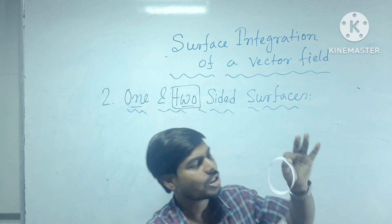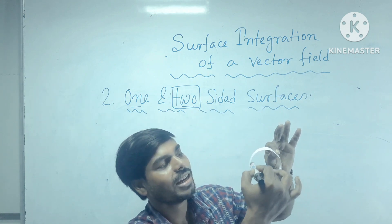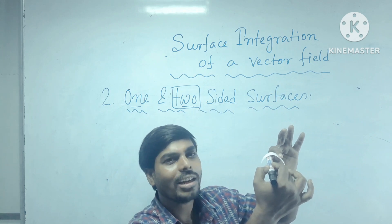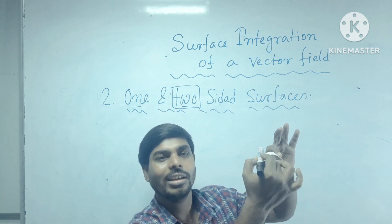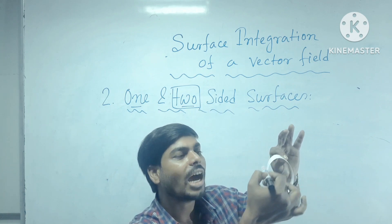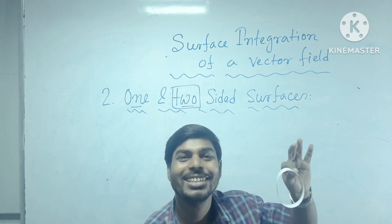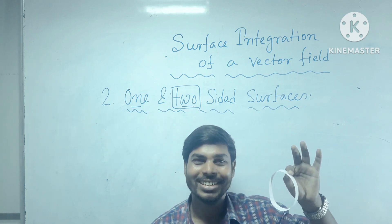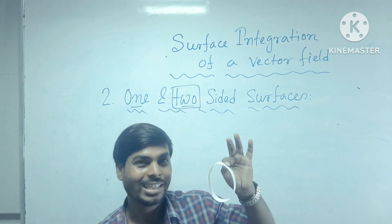But there is another very beautiful surface which has only a single side. If you start your journey on the inner surface, suddenly, without crossing anything, you will reach the outer surface. And this is known as the one-sided surface.